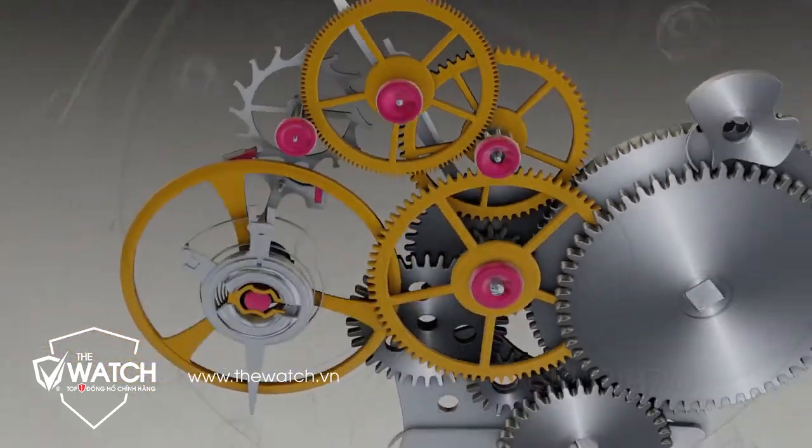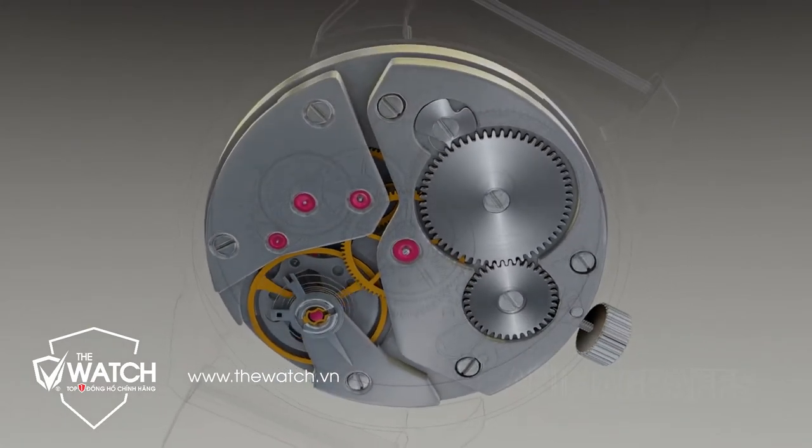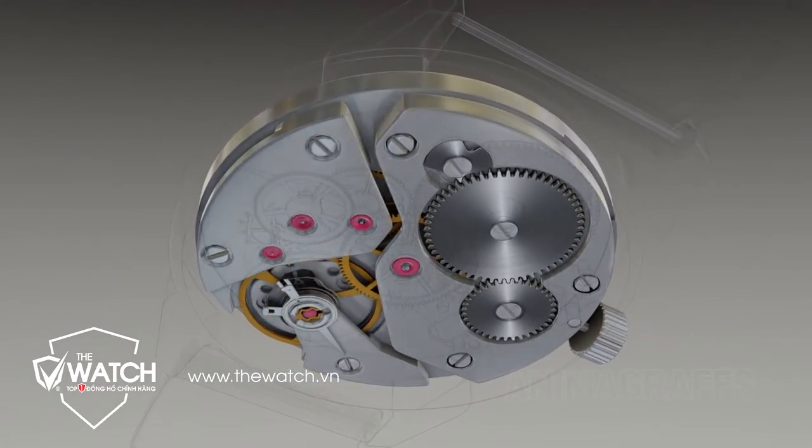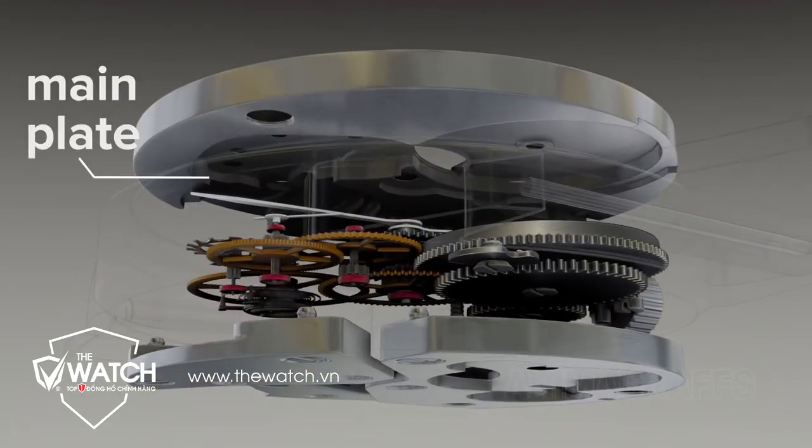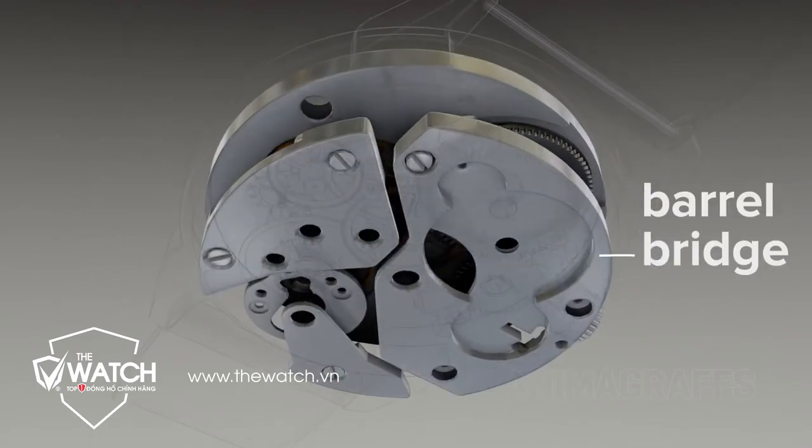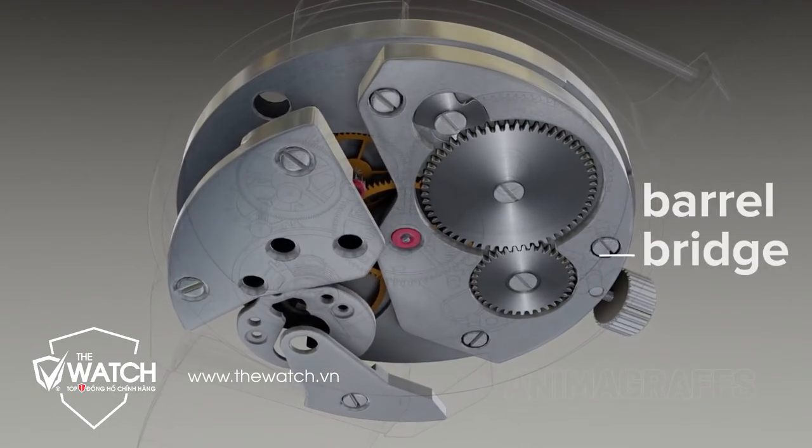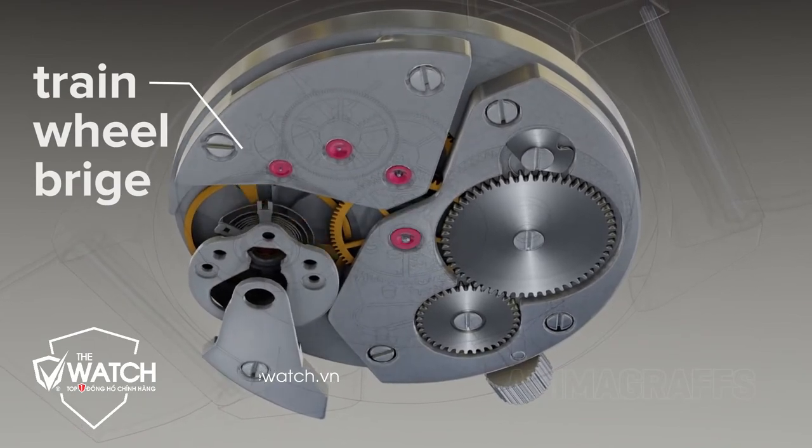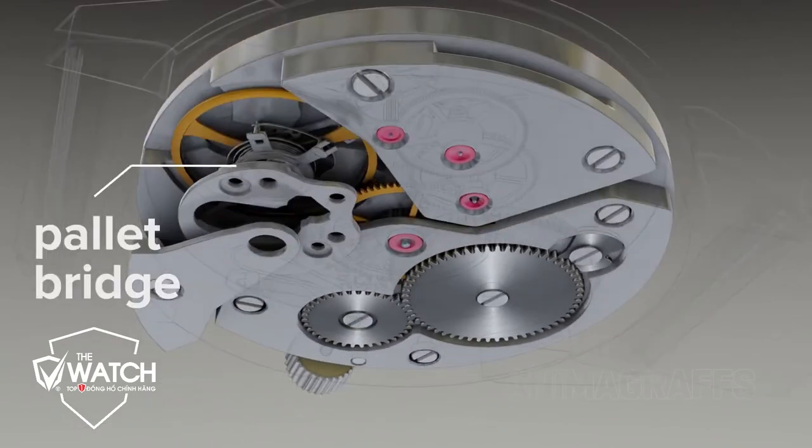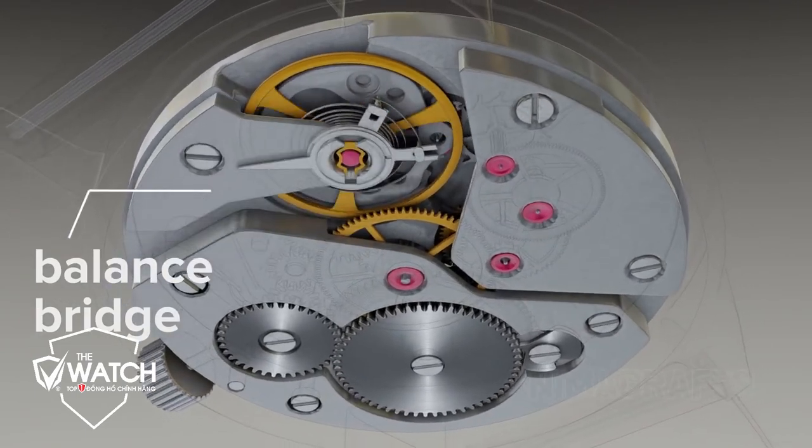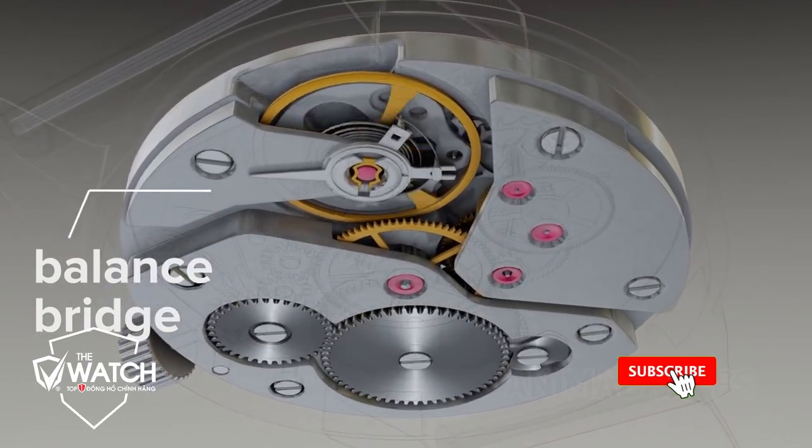Supporting structure. Various specially shaped metal plates support watch internals. The main plate serves as the base. The barrel bridge holds the mainspring barrel and associated parts. The train wheel bridge supports the wheel train. The pallet bridge holds the pallet fork. And the balance bridge supports the balance wheel and regulator assembly.